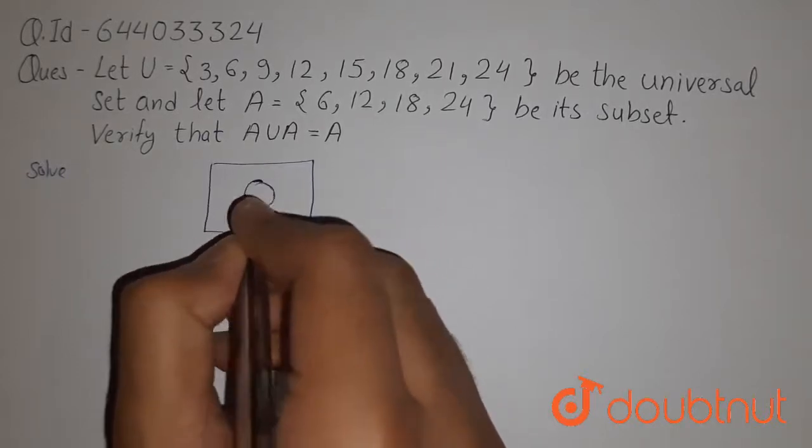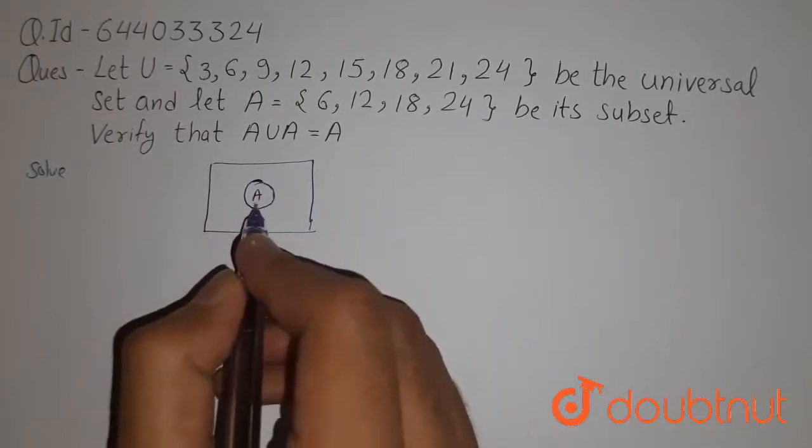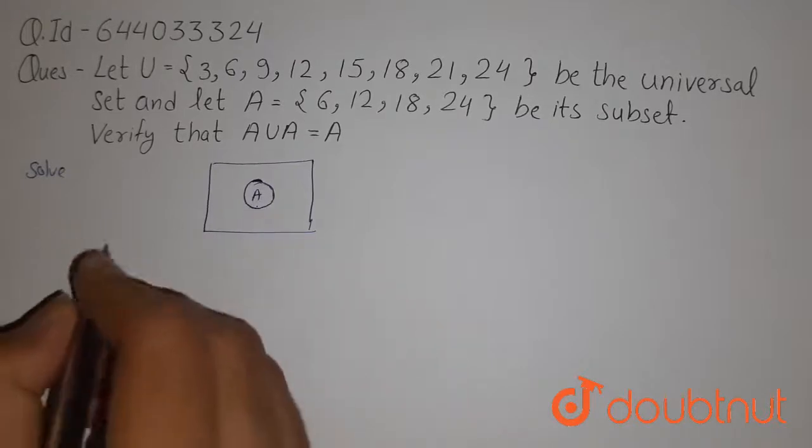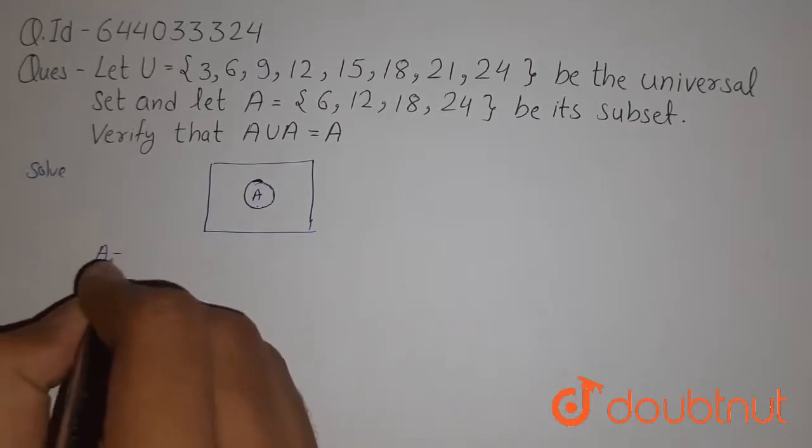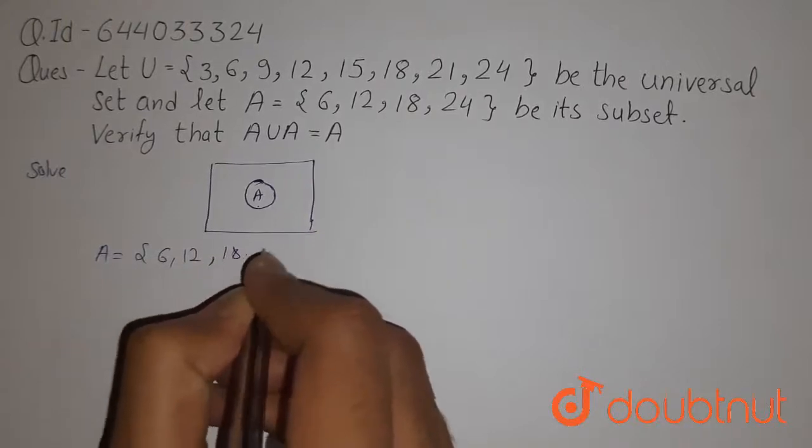and suppose this is set A. Now we have to find the union of set A with itself. So given set A is 6, 12, 18, 24.